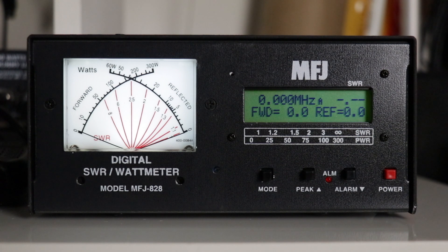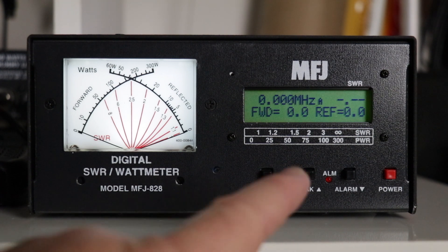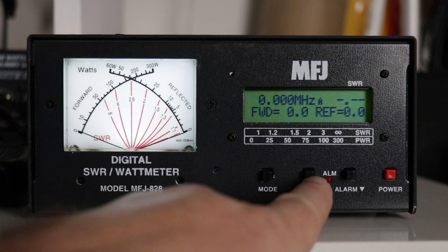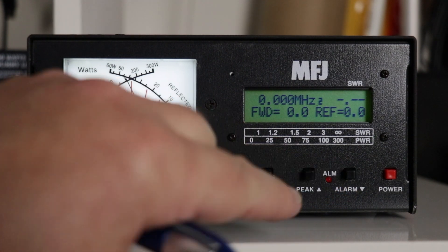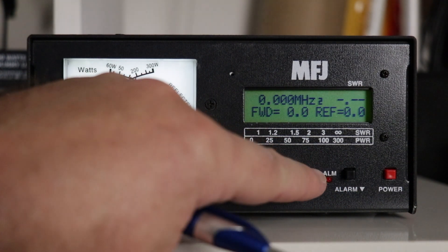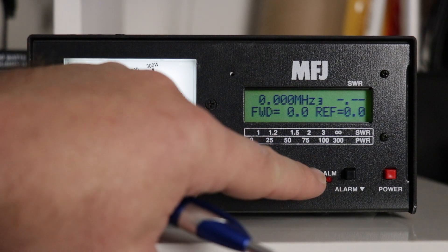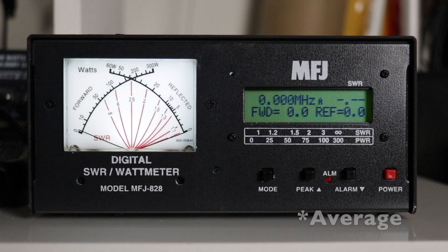The peak button allows you to do peak or average. Right now I have it set to average. Just push it once. Now it will hold for one second, two seconds, three seconds, and back to auto.